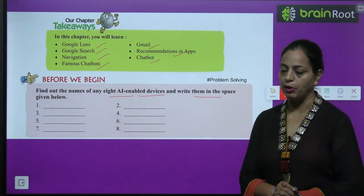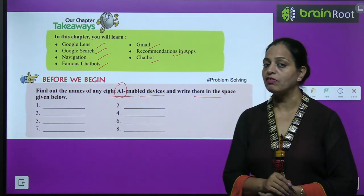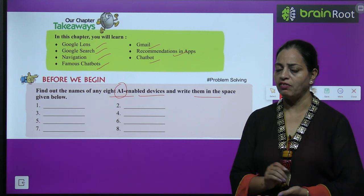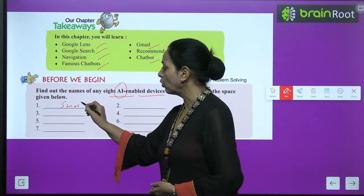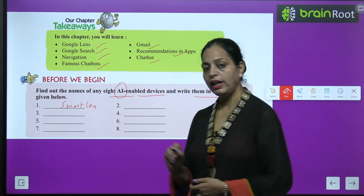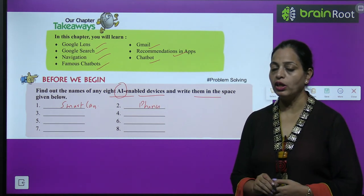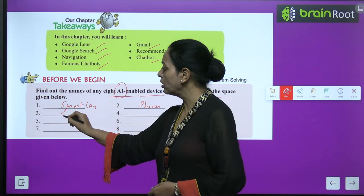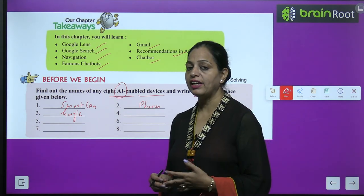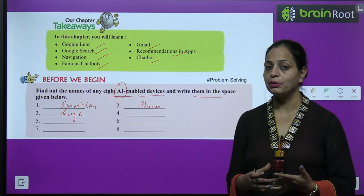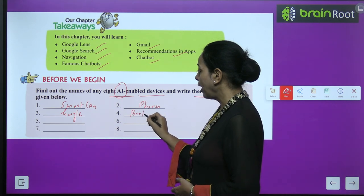Before we begin, find out the names of any AI-enabled devices and write them in the space given below. Artificial intelligence is very important. We can see so many devices like smart cards, which work according to AI. Our mobile phones, Android or Apple, are based on AI. Google is also AI-based. Streaming platforms like Netflix or Disney Hotstar are also based on AI, and so is e-banking.